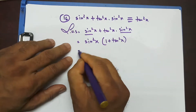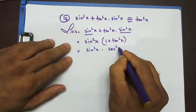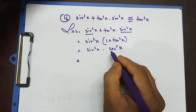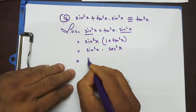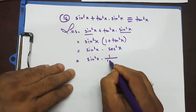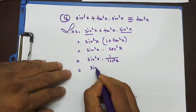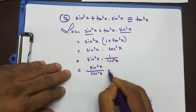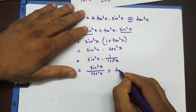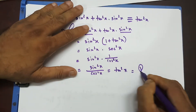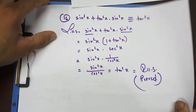So replacing (1 + tan²x) with sec²x, I have sin²x times sec²x. Since sec²x equals 1/cos²x, this is sin²x/cos²x, which equals (sinx/cosx)² = tan²x — and that equals the right hand side. So question 16 is done.